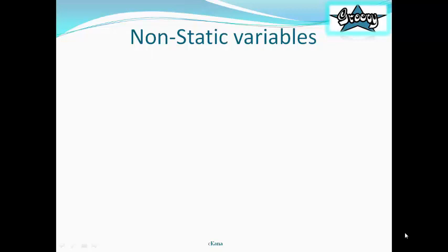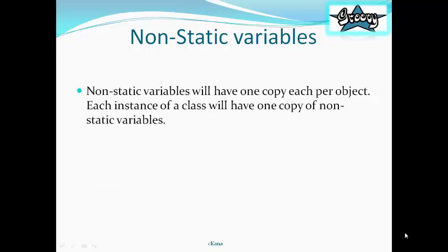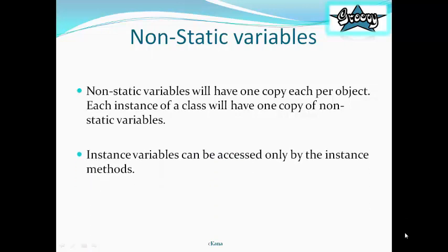Non-static variables. What are non-static variables? Non-static variables will have one copy each per object. Each instance of a class will have one copy of the non-static variable. Instance variables can be accessed only by the instance methods. This is the difference. Instance variables are allocated at compile time.